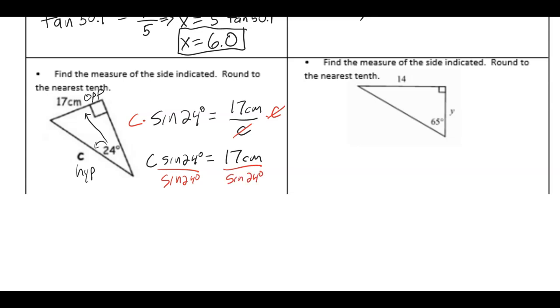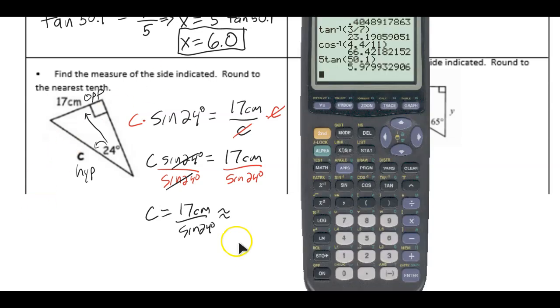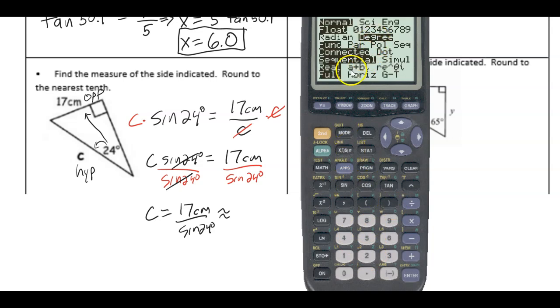And then to solve for c I can divide by this sine 24 degrees which is just a single number, although we're writing it with lots of extra characters. We get c equals 17 centimeters divided by sine of 24 degrees and we want this to the nearest tenth so we go to our calculator. And we have 17 divided by sine of 24, making sure you're in degree mode.